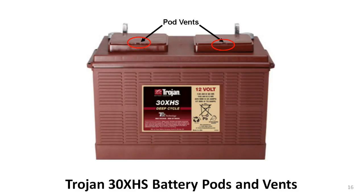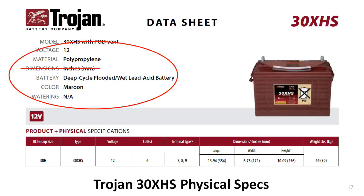The electrolyte is a sulfuric acid solution, so letting it get outside the battery is a very bad idea — it will burn your skin, your clothes, and most everything else it touches. Don't do it. The next few lines tell you that the battery is a 12-volt model, the case is made of polypropylene, it is a deep cycle flooded lead-acid battery, and it's maroon in color. The dimensions line tells you nothing useful. The watering line refers to a system of tubes for adding water to each cell; the 30XHS does not have this feature.